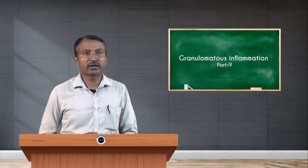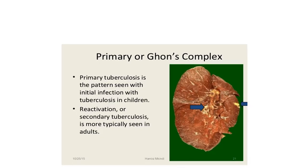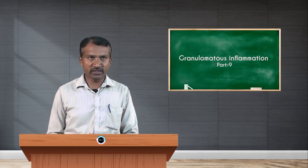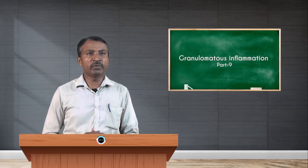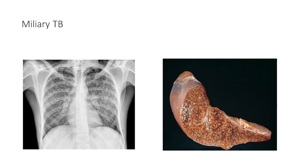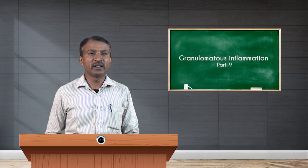The primary Ghon complex, or pulmonary tuberculosis, is the pattern seen with initial infection in children. Reactivation or secondary tuberculosis is more typically seen in adults. In miliary tuberculosis, there will be a millet seed-like appearance on a chest X-ray and even on the cut surface of the lung.